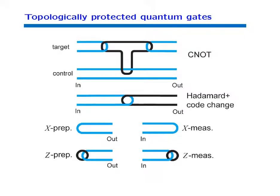In topological fashion, you can perform CNOT gates, a Hadamard gate combined with a code change from primal to dual qubit (inseparably), prepare logical qubits in the X or Z basis, and measure in the X or Z basis. However, all of this is Clifford operations, which is not a universal set of operations, so something more is needed.